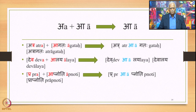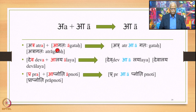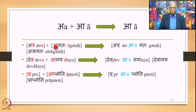Next is long A plus A giving long A as output. Example: 'atra agataha' — a sentence with two padas. Atra ends in long A and agataha begins with short A. In Samhita mode, 6.1.101 applies substituting both with one long A, yielding 'atrāgataha' as the resultant form.